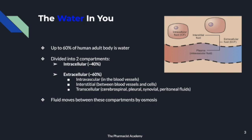The body is divided into two main compartments: intracellular — referring to inside the cell — and extracellular, referring to outside the cell. The extracellular compartment has three parts: the intravascular (inside the blood vessels), the interstitial (between the blood vessels and the cells), and the transcellular fluids. The picture on the top right shows exactly what I'm describing.